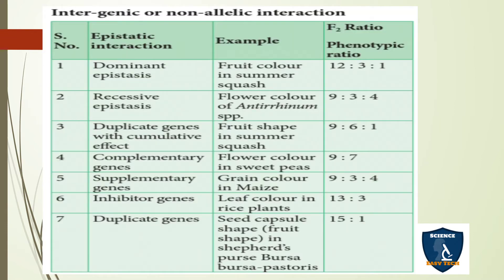So intergenic or non-allelic interactions can be categorized. The following table shows the serial number, epistatic interactions, examples, and the F2 phenotypic ratio.